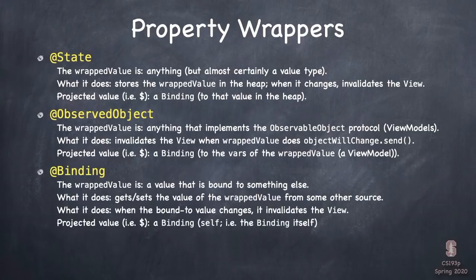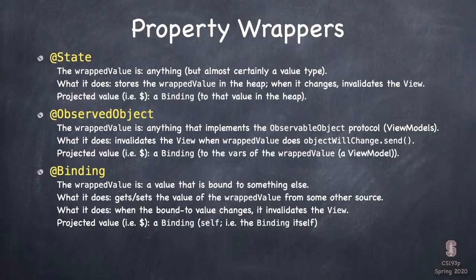What about @Binding itself? It's a property wrapper. The wrappedValue of @Binding is a value that's bound to some other thing somewhere else — like a ViewModel's var, or an @State in some other view. An @Binding struct gets and sets the wrappedValue by getting and setting the value of that other thing, and also invalidates the view. The projectedValue of a binding is essentially self — the binding itself — or a binding to the value it's already bound to.